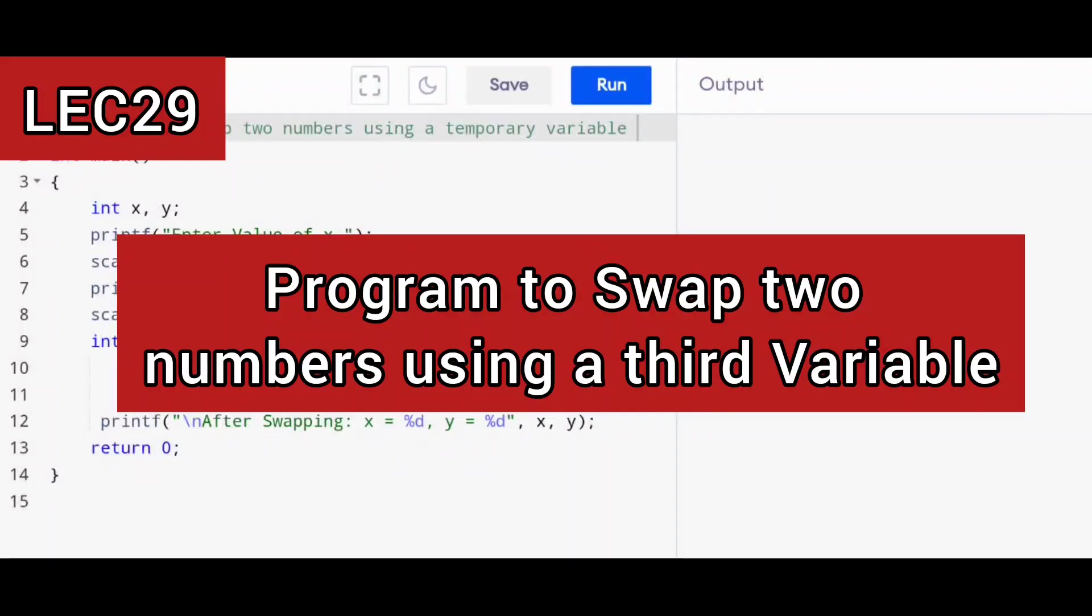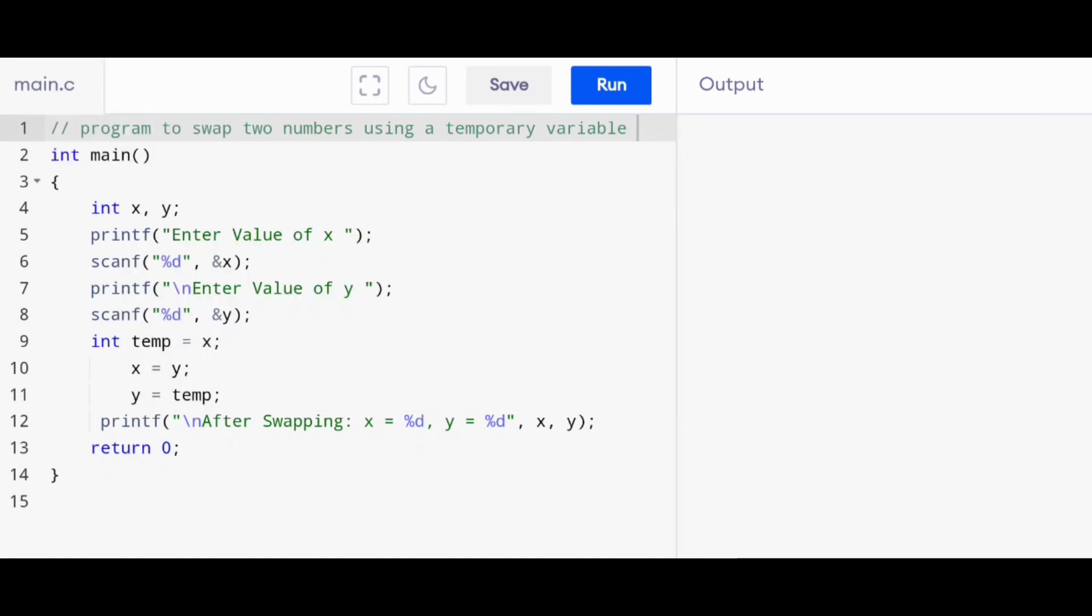Welcome to this video lecture series on C programming. In this session, I shall be discussing a program, a C program to swap two numbers. Now, this swapping of two numbers is done using a third variable or we call it as a temporary variable.